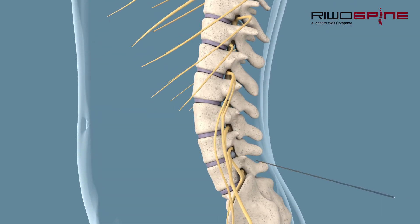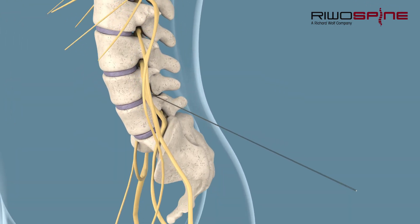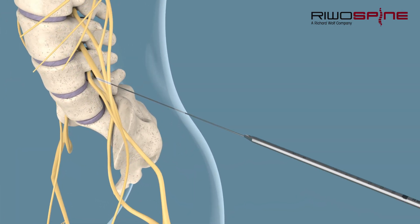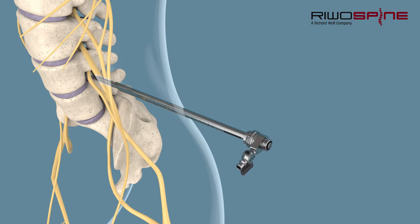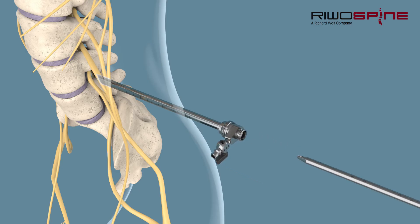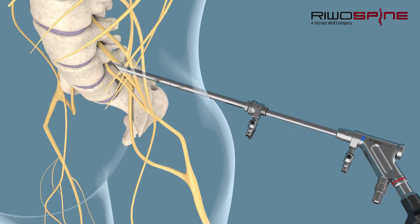First, a guide wire is used to ensure the correct positioning of the instruments. Thanks to special instruments and devices such as the dilator and working sleeve, this procedure offers the most minimally invasive approach compared with conventional methods.